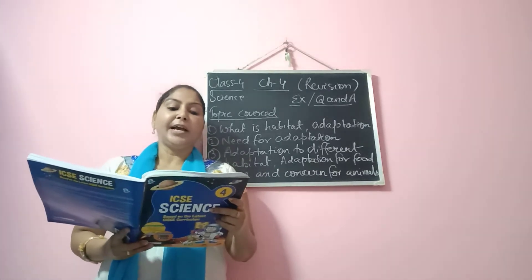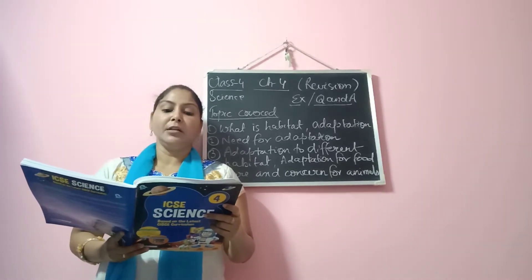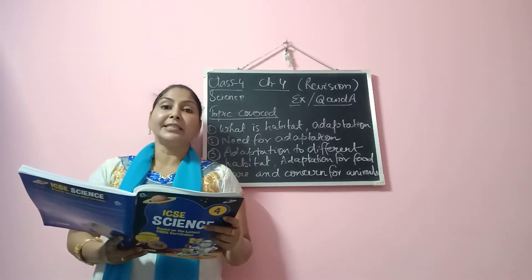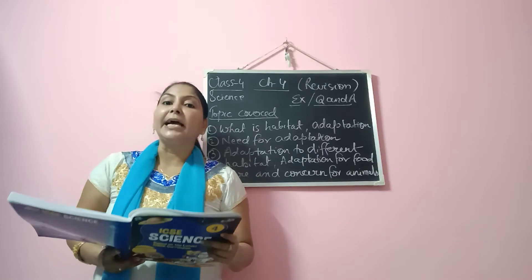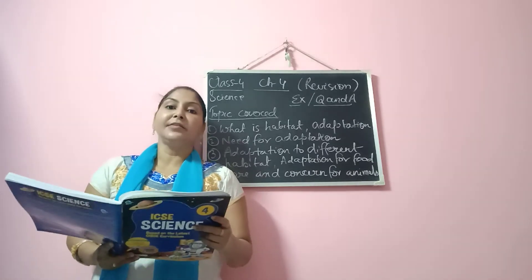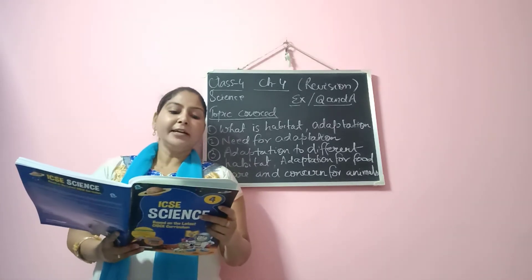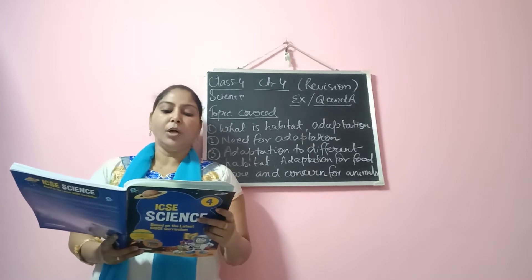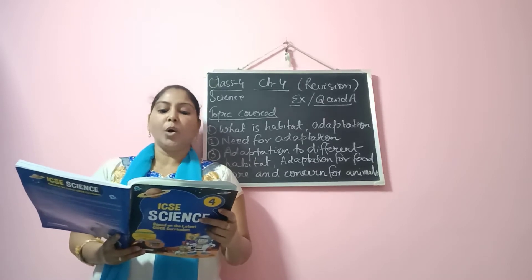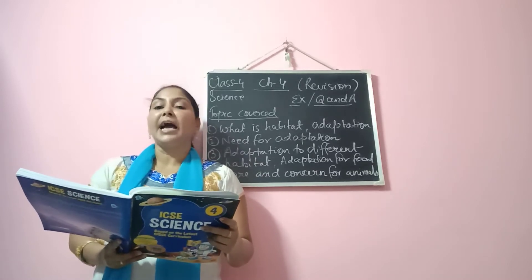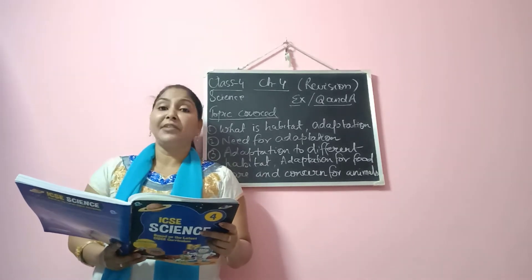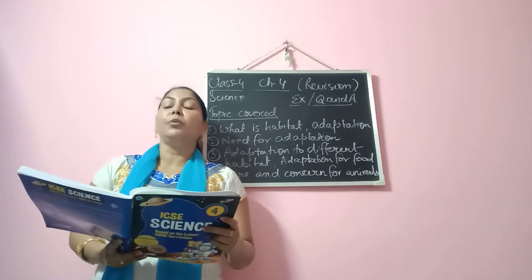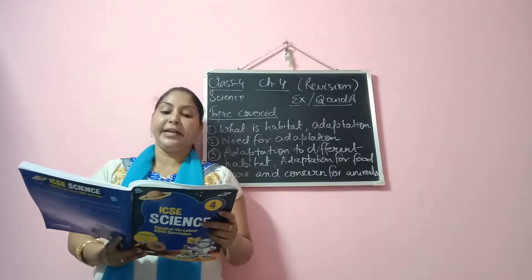Question 1: The place where a particular type of animal or plant normally lives is called its — the answer is habitat. Question 2: Land animals that live on trees are called arboreal animals. If you have doubt in the spellings, please look into the book and write the correct spelling.